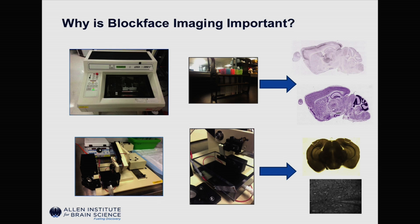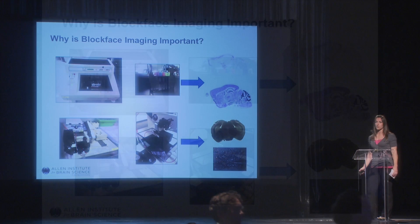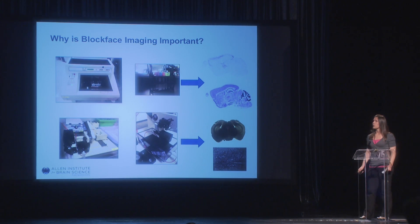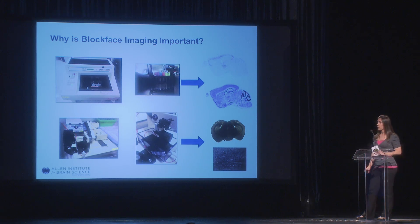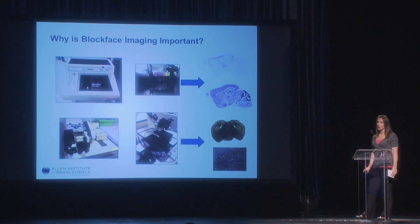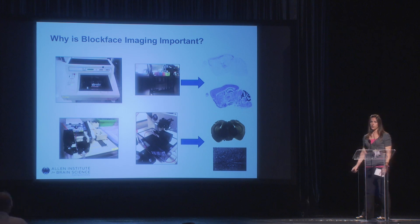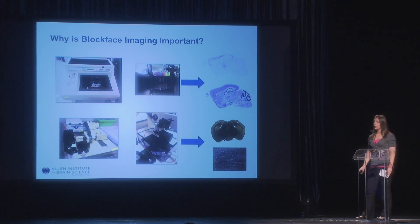Fresh tissue presents a specific and unique problem, because it deteriorates over time, or if dissociated into single cells, it doesn't exist at all. So it's very difficult to tell where you were in the brain or what exact region you were working from. Having a block-based imaging system will allow us to take a snapshot of the tissue before it is sliced, and allow our technology informatics team to register that data for further analysis.